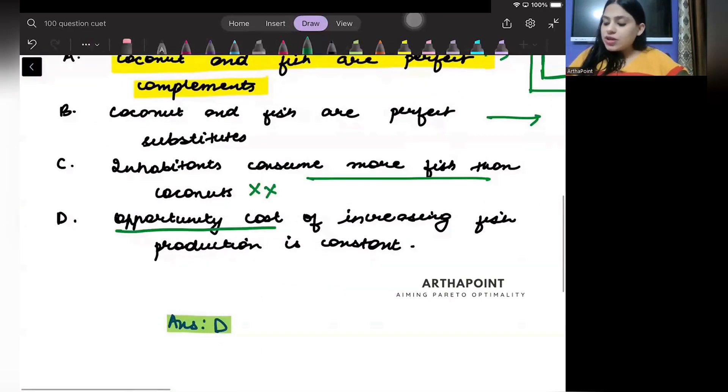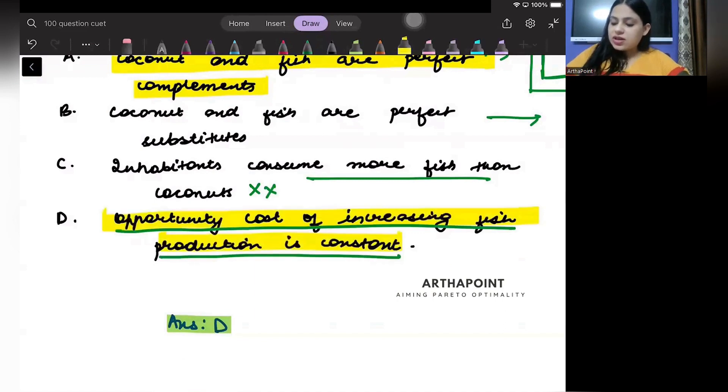Opportunity cost of increasing fish production is constant. So, this is the correct answer that the opportunity cost is constant. Okay, beta. Thank you.